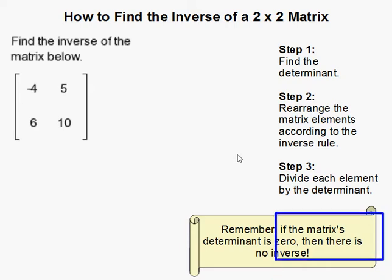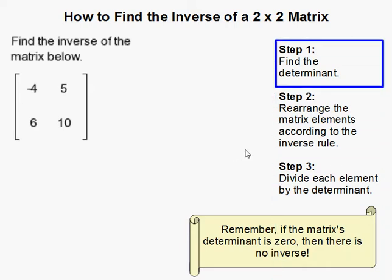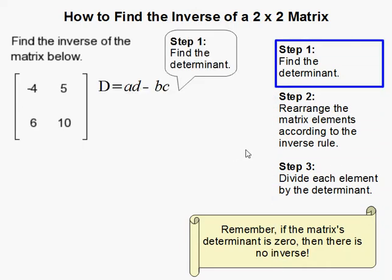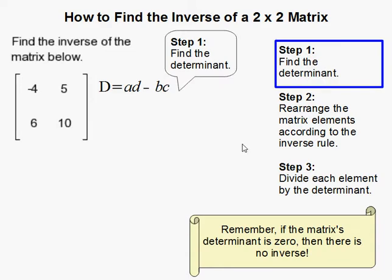How to find the inverse of a 2 by 2 matrix. So the first thing you do is find the determinant. The determinant of a 2 by 2 matrix is simply A times D minus B times C.